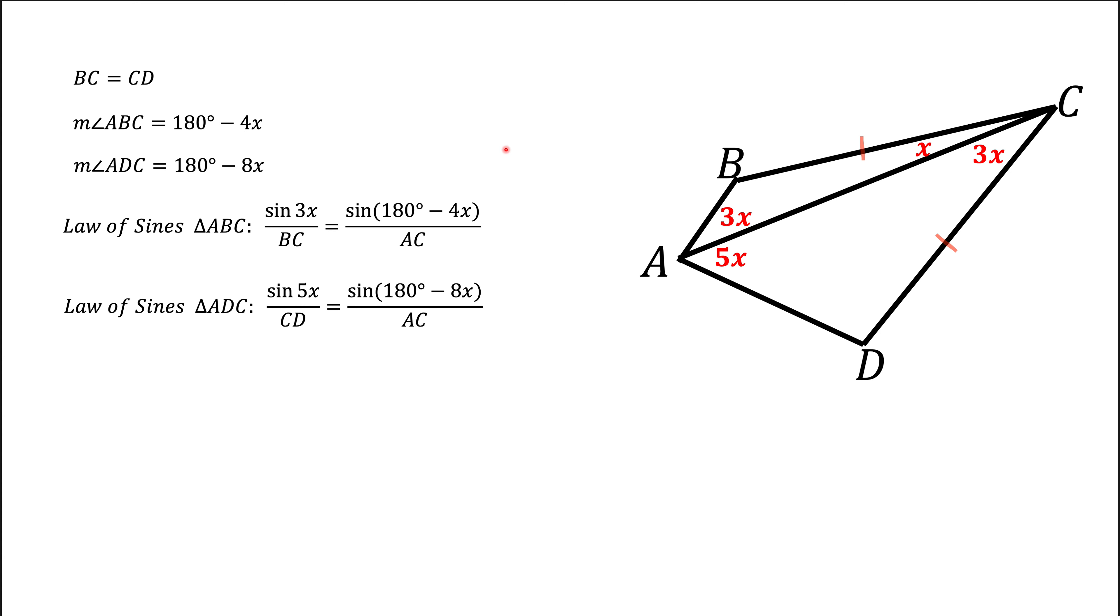Notice that both of these formulas have AC sitting here, and also they have BC and CD which we know are the same. So what are we going to do now? We're going to divide the top equation by the bottom one. If you do that, BC is going to cancel CD and AC is going to cancel itself. All we have here is a trigonometric equation which we're going to solve to find x.